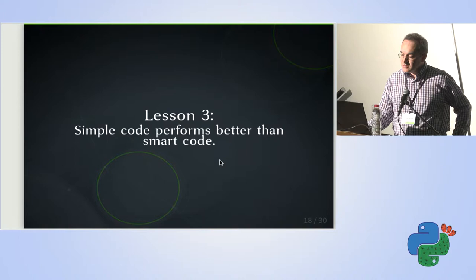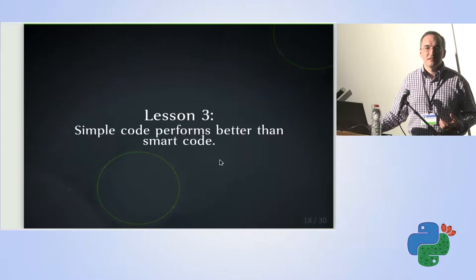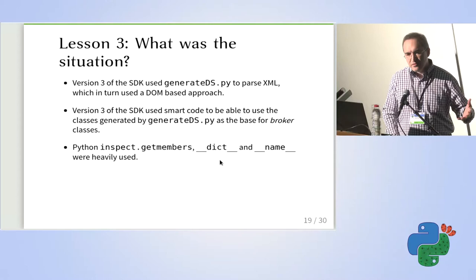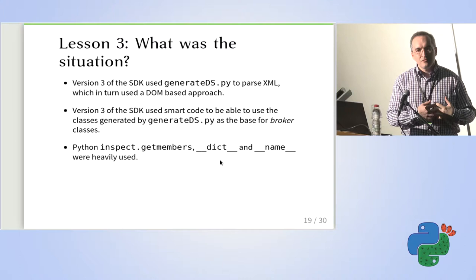The third lesson is about code complexity — being smart versus sometimes being simple. In general we all think smart code is better, but sometimes it's not. Let me show you what the situation was with version 3 of the Python SDK.